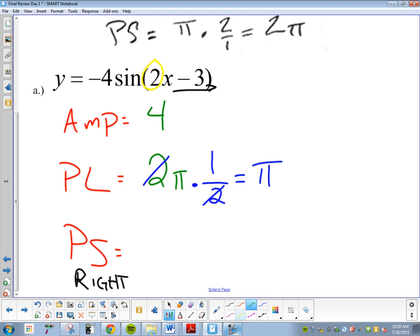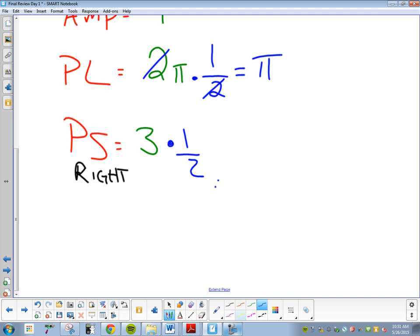We start off with that three. Is it just going to be three here? No, what do I need to do with that three? What did we do with period length? We multiply by the reciprocal of whatever's in front of our x. You do the same thing for period length and phase shift. So I need to multiply three times the reciprocal of whatever's in front of my x. One half. So my phase shift here is going to be three over two to the right.